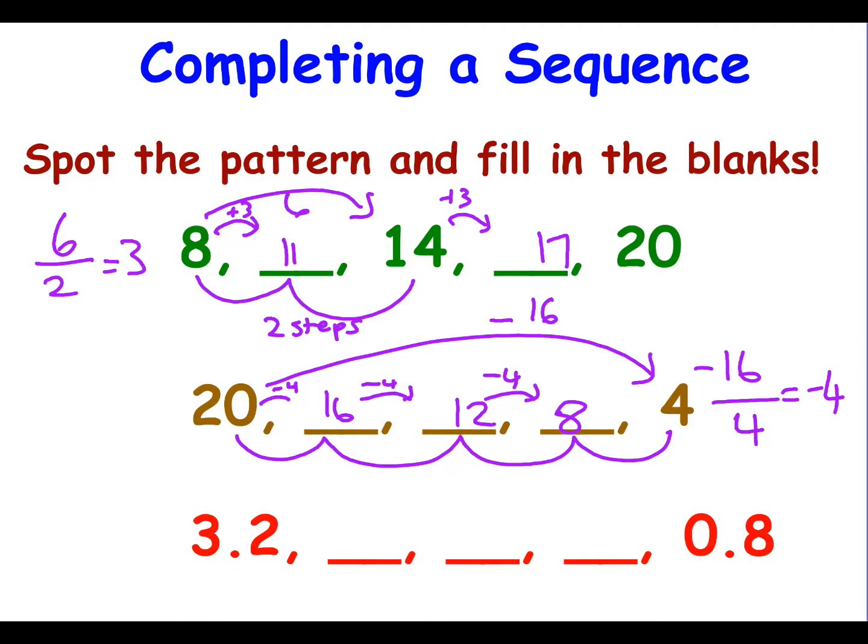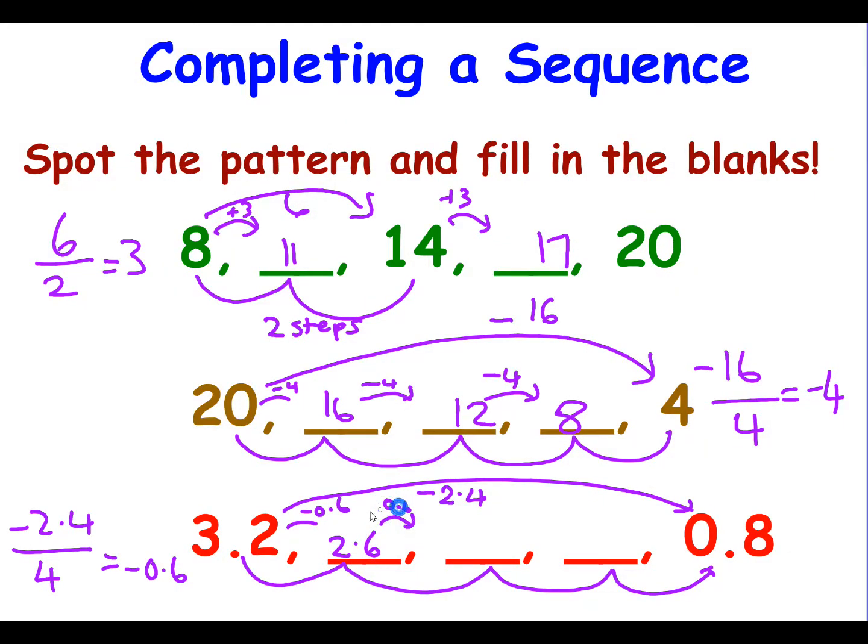And this works for any questions on sequences that have gaps. Look at your gap and decide what the distance is between them. So to get from 3.2 to 0.8, it's gone down. So it's a negative number. And it's gone down, take one from the other, by 2.4. Now I've got 1, 2, 3, 4 steps. So minus 2.4 divided by the 4 steps tells me each step is minus 0.6. So 3.2 take away 0.6 is 2.6. Then we take away 0.6 again, we end up with 2. Then we take away 0.6 again, and we end up with 1.4.